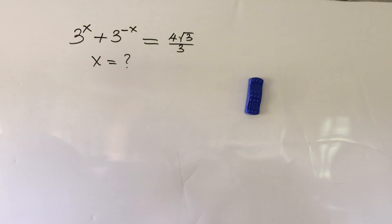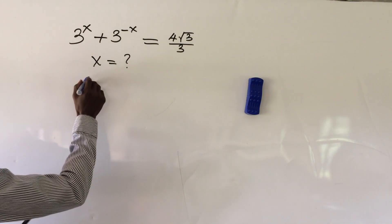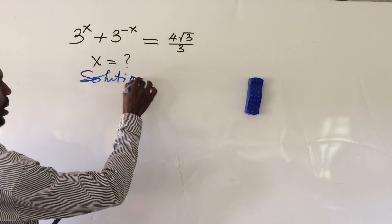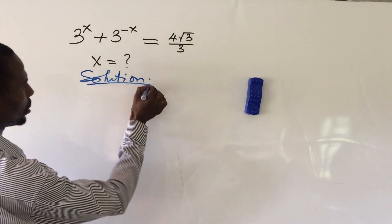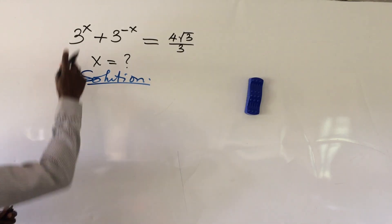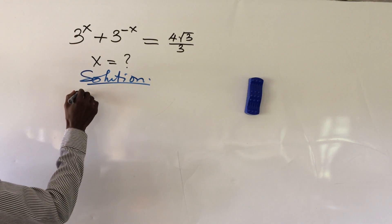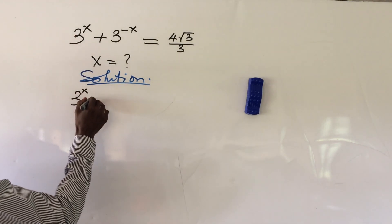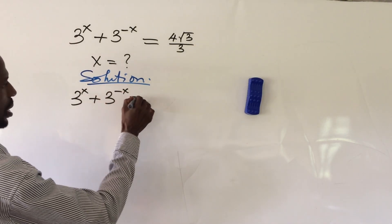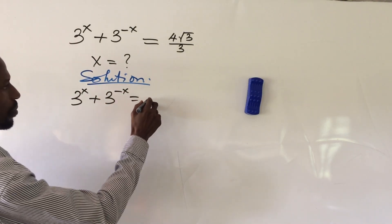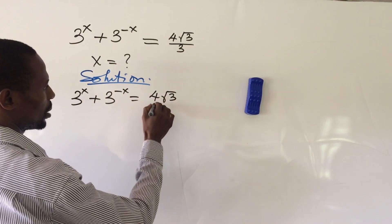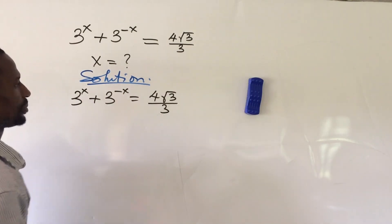We'll write down our solution to the question. The question is: 3 to the power of x plus 3 to the power of minus x equals 4 root 3 all over 3.